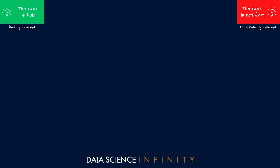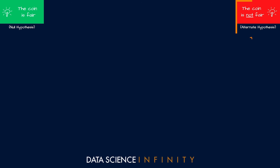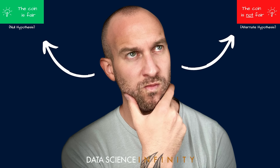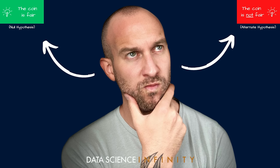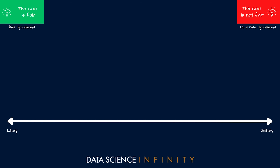I will only be swayed from the view that the coin is fair if I observe some outcome that would be so unlikely with a fair coin that it seems implausible. If that happens, I'll start to think it's more likely that Pete is up to no good. But at what point will I make that switch — how much evidence will I need? I need to quantify this.